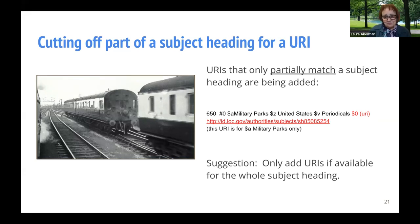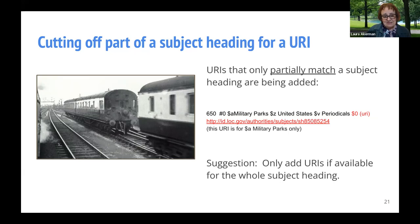For subject headings, which are a long string of subfields, we were seeing that URIs that only match part of the string of subfields are being added in subfield zero. Only subfield A is being covered and the other subfields are sort of cut off. Associating a URI for an authority for only part of the heading could confuse things quite a bit. Our recommendation is: if Ex Libris can do it, only add URIs if you are able to retrieve them for the entire heading. A part is not the same as the whole, and we need to be exact about what we're talking about.